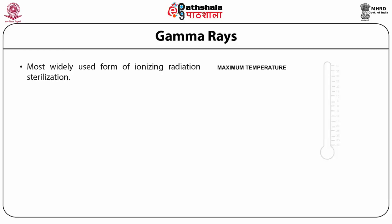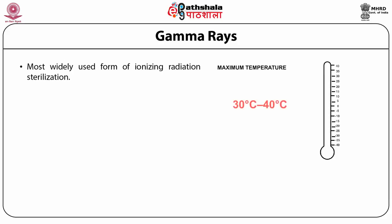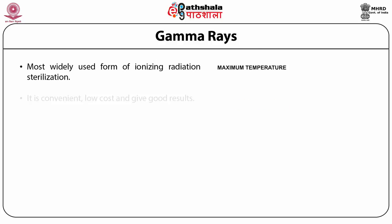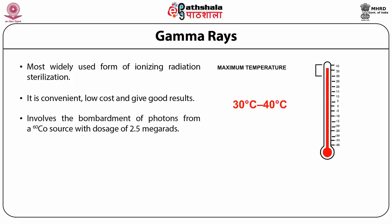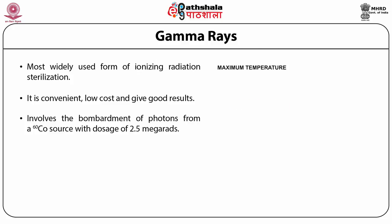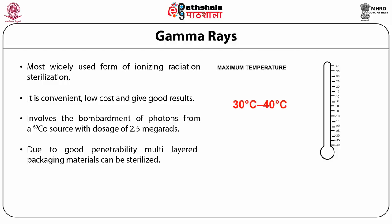Gamma radiation is the most widely used form of ionizing radiation. Gamma irradiation has become the industry standard for high-energy sterilization due to its convenience, low cost and good sterilization results. Gamma irradiation involves the bombardment of photons from a Co-60 source. Because of the excellent penetrating ability of gamma rays, a wide range of packaging materials may be gamma sterilized, including those composed of multiple resins.